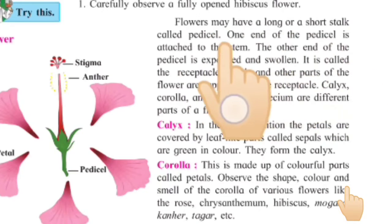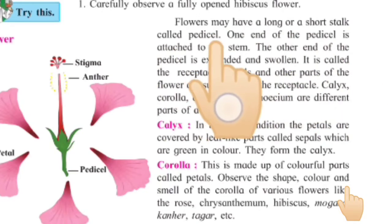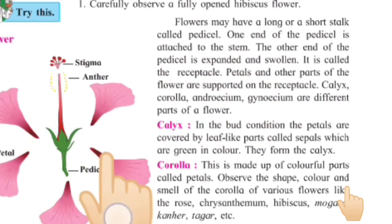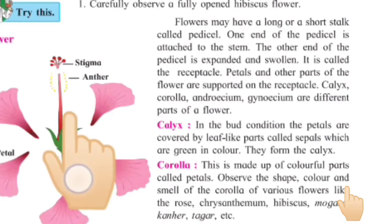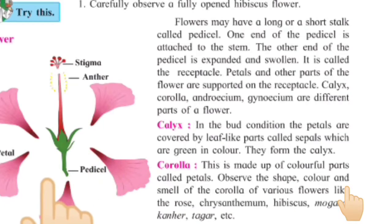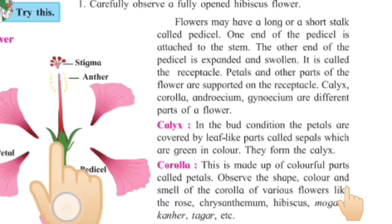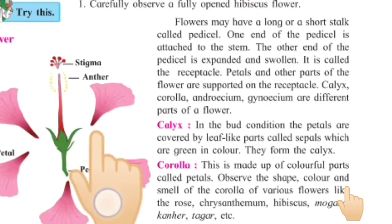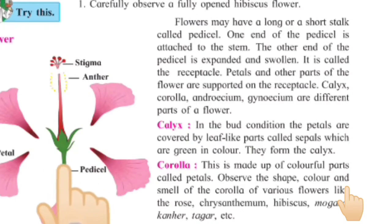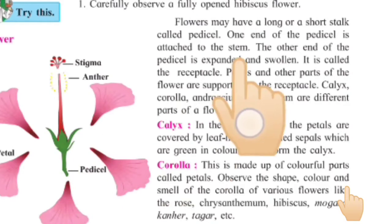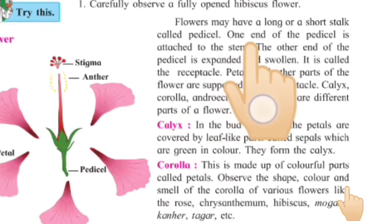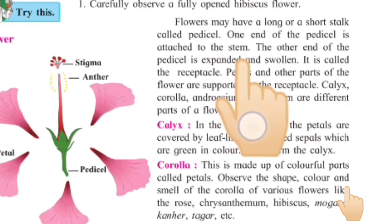Flowers may have a long and short stalk called pedicels. The first part of the flower is the pedicel. The pedicel is a long and short form. You can see in figure 1 what is the pedicel. The pedicel is the particular part of the flower which is connected to your stem. One end of the pedicel is attached to the stem.